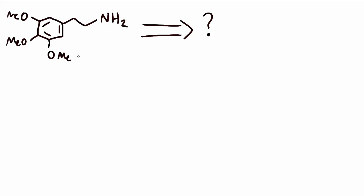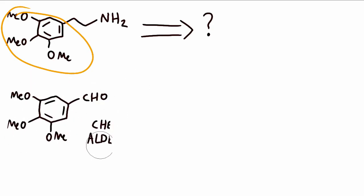Now fortunately for us, we don't really have to do any ring synthesis because this 3-4-5 trimethoxy aryl substitution pattern is quite common in nature, and as a result the starting materials are very cheap.